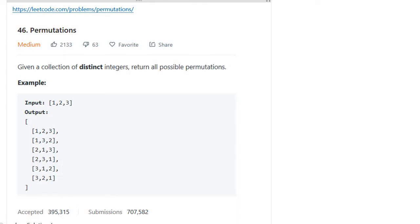Hello, today we are going to solve the Permutations problem. Given a collection of distinct integers, you have to return all possible permutations. Let's see the example: for input [1,2,3], the output has six permutations.